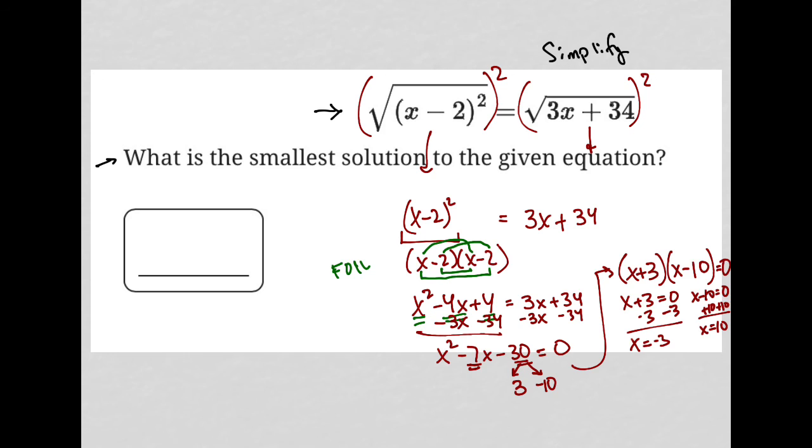The question asked for the smallest solution. Well, that would be negative 3, right? Negative 3 is smaller than 10, so our answer here is negative 3.